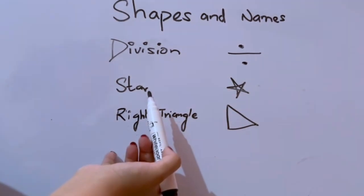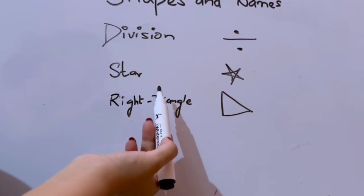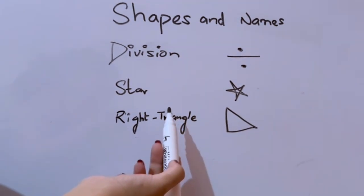Star: S-T-A-R. Right triangle: R-I-G-H-T T-R-I-A-N-G-L-E.